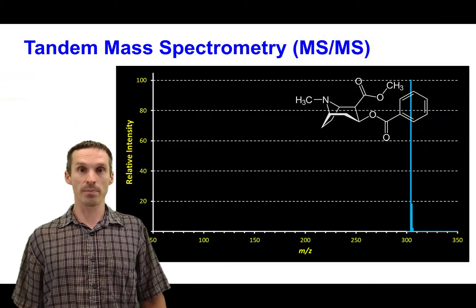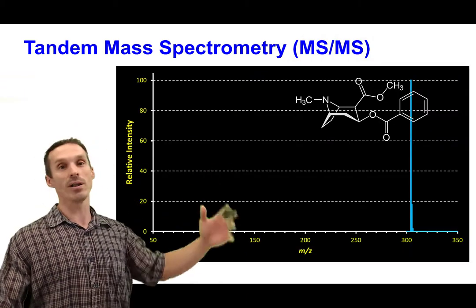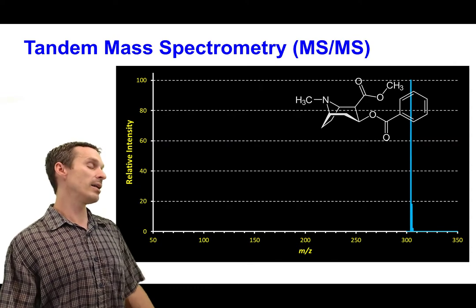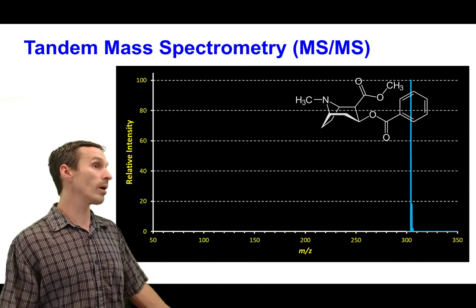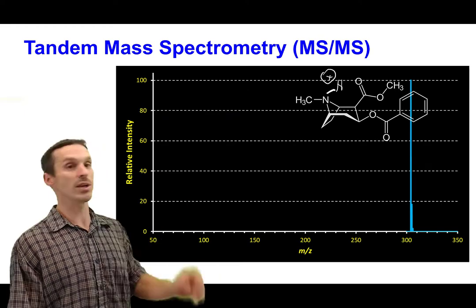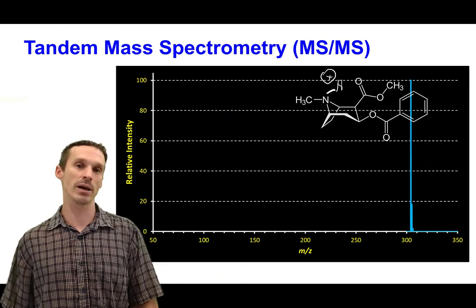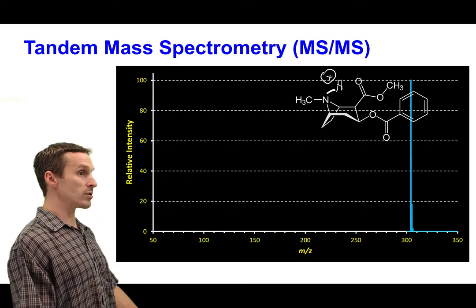So practical example here. Let's say you have our favorite molecule now, cocaine, and it's detected with a mass of in this case 304. Why do I know that? Well because this has to be protonated. I'm looking at electrospray ionization. And this is what we would see.